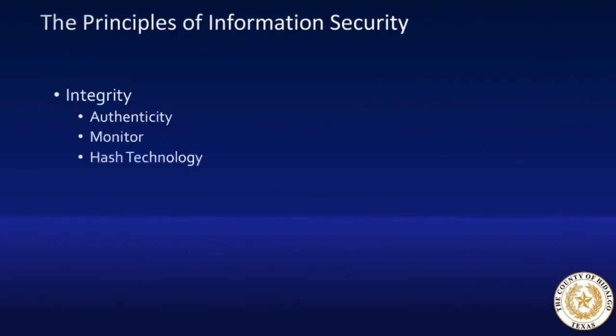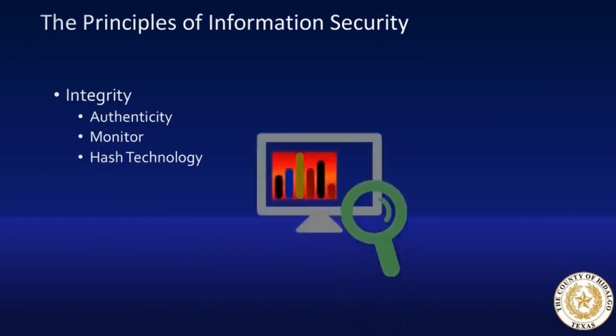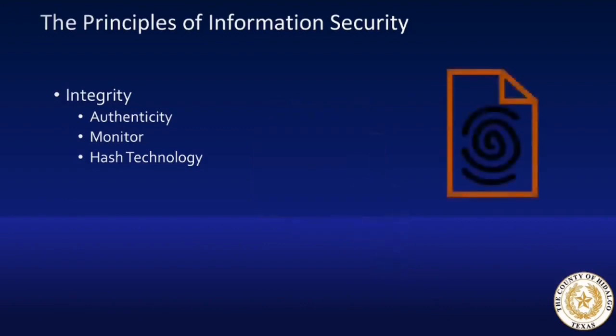Integrity in this case means guaranteeing the data of information is genuine. County data should be monitored and guarded against unauthorized modification, making sure the data is valid. There are tools that help detect unsanctioned changes in our information resources. These systems can detect unapproved activity in our environment, monitor system health and status. Hash technology is used to validate the integrity of each file. There are hash values unique to each file, much like a fingerprint is unique to an individual. If a file is modified in the slightest, such as the removal of a period at the end of a sentence, the entire hash value changes. These various technologies work together to support the integrity of information resources.